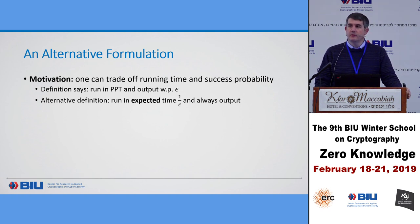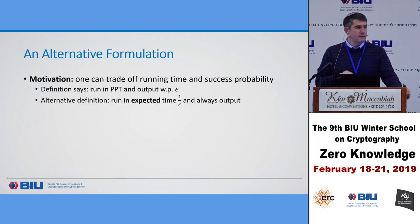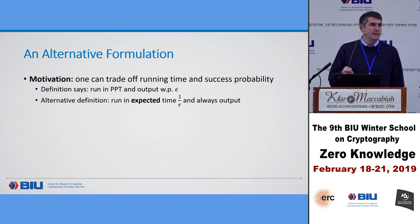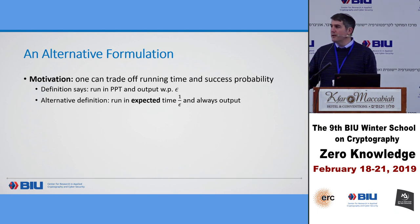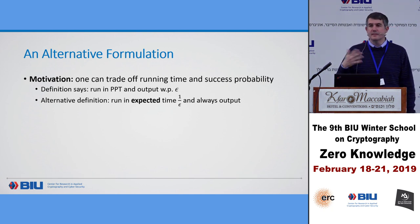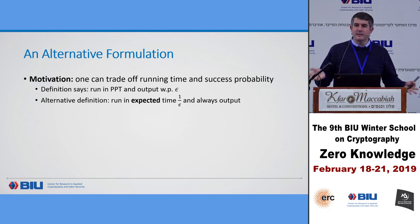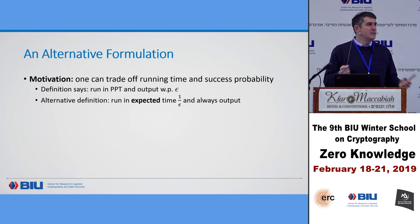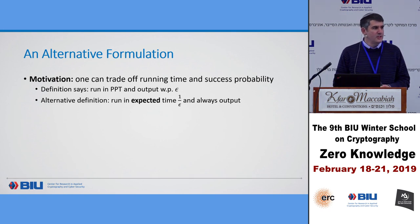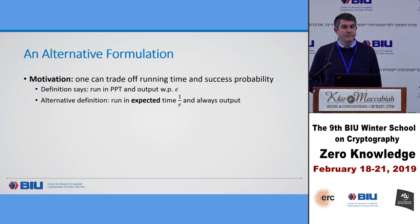The motivation behind this alternative formulation is that we can often trade off success probability with running time. If I want to throw a dice and get a six, I can throw it once and succeed with probability one sixth, or throw multiple times until I get a six. The more times I throw, the higher my probability. Similarly, I can buy one lottery ticket and have a low probability, or buy 100,000 tickets with a higher probability — the expectation stays the same but I have a higher probability of winning.